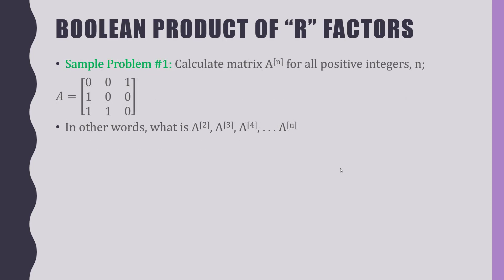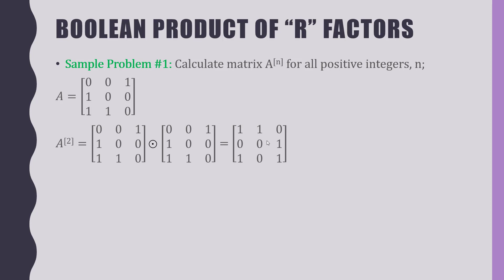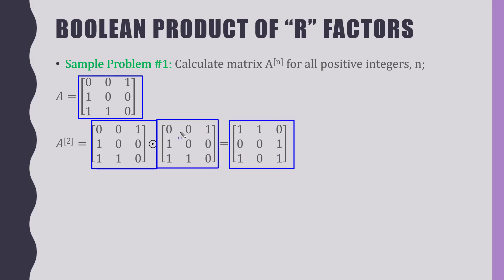As an exercise, we'll calculate matrix A raised to the nth power for all positive integers n, using the boolean product. Here's the problem: matrix A is [0,0,1; 1,0,0; 1,1,0]. We're asking what is A², A³, A⁴, all the way up to Aⁿ. Let's start by taking the boolean product of A times A. We have our original matrix A and boolean product it with itself — that is the result.